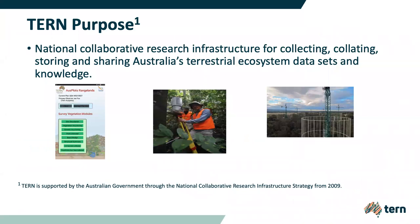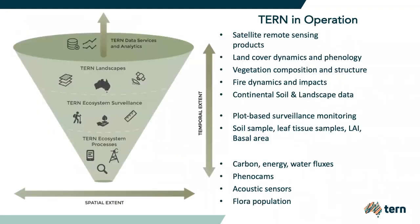TURN is an NCRIS-funded initiative to collect and publish terrestrial ecosystem data. In TURN, data is collected at three different scales. Firstly, the TURN landscape performs observation and derived products at continental scale. These are remote sensing observations and model-derived data products.